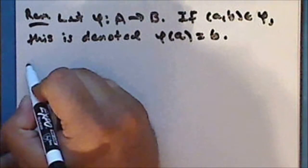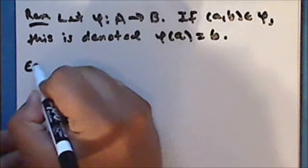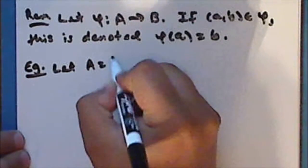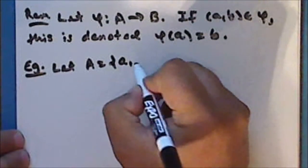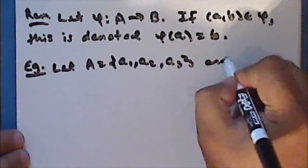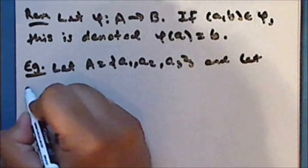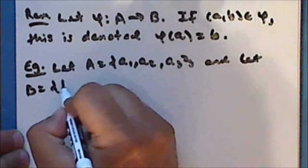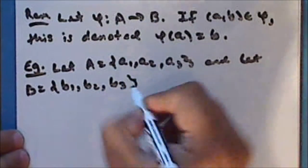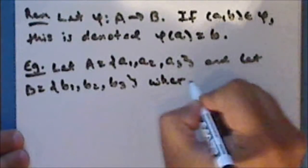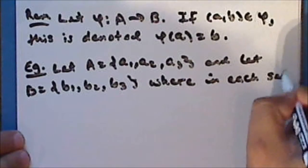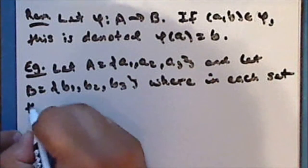Let's look at an example. Once again, let the set A be the set containing the elements a₁, a₂, and a₃. And let the set B be the set containing the elements b₁, b₂, and b₃, where in each set the elements are unique.